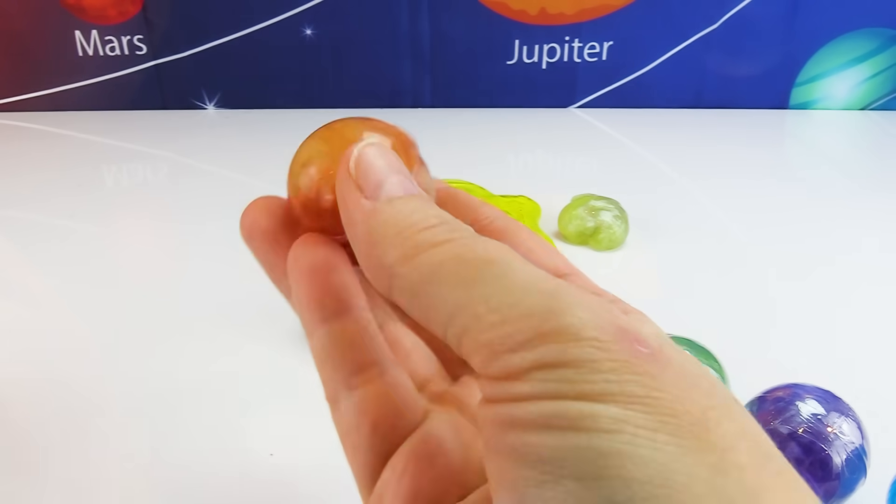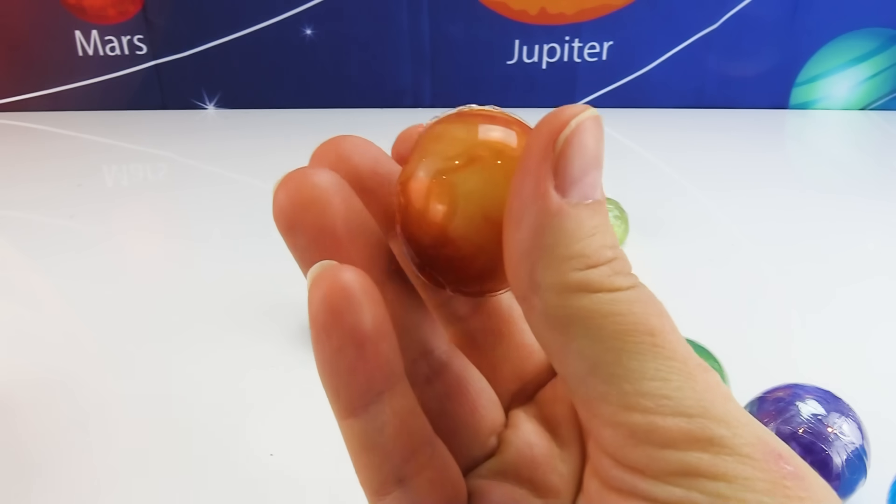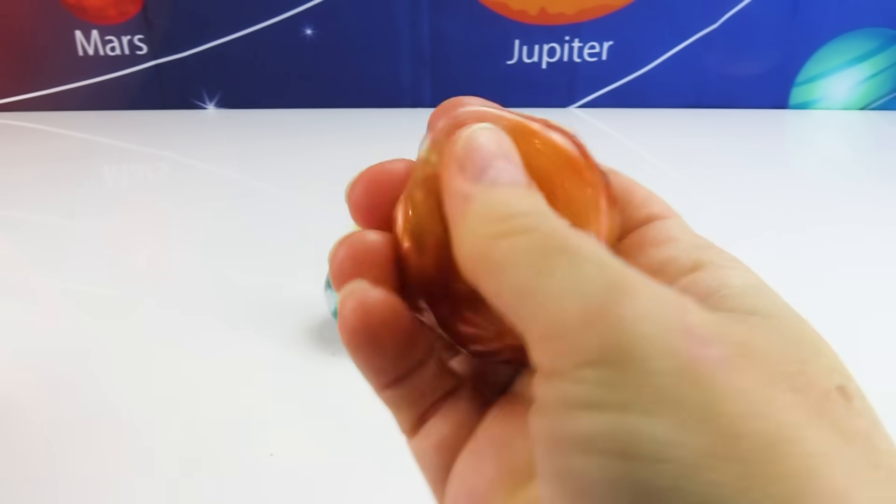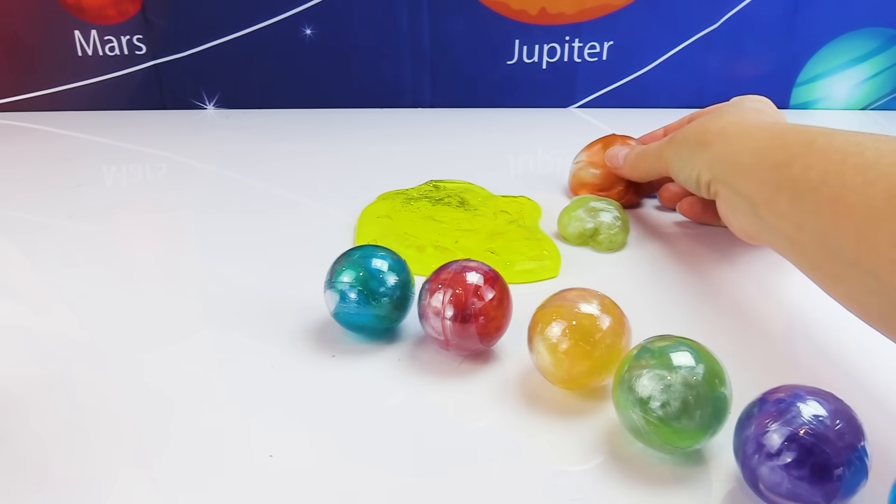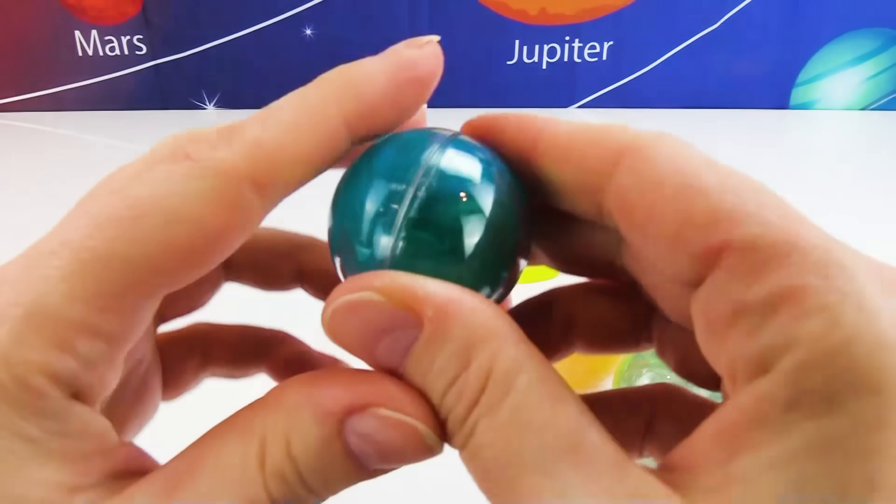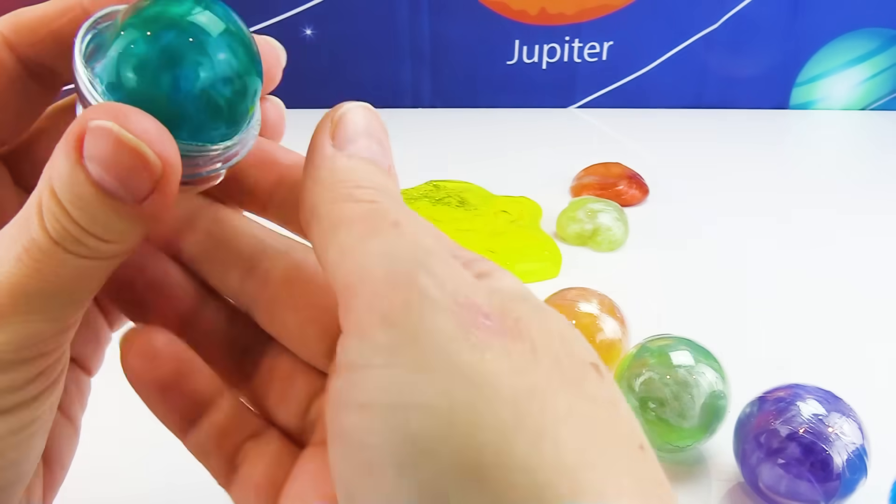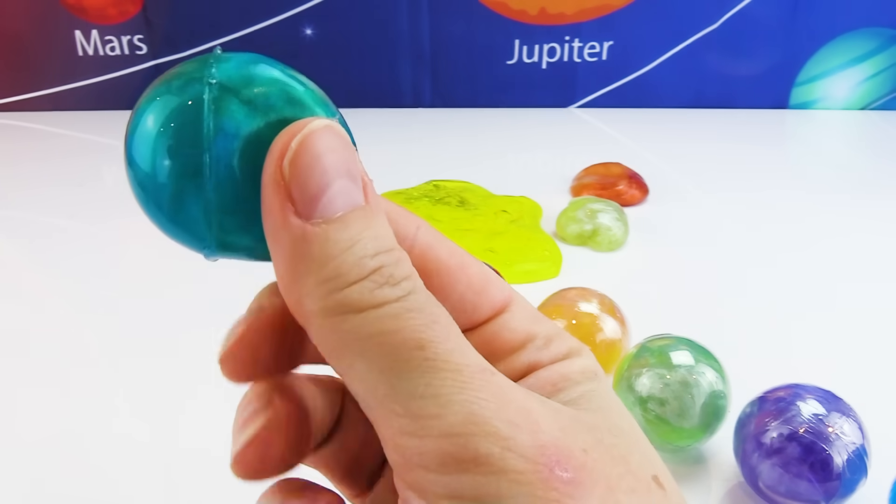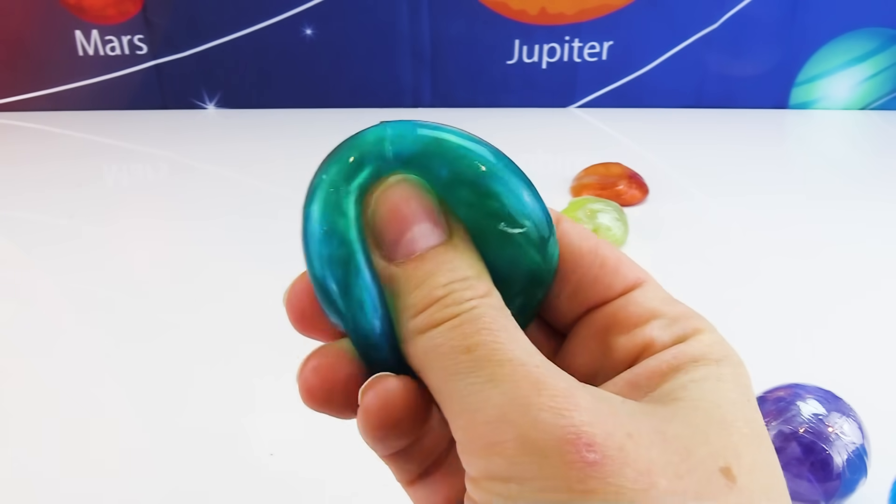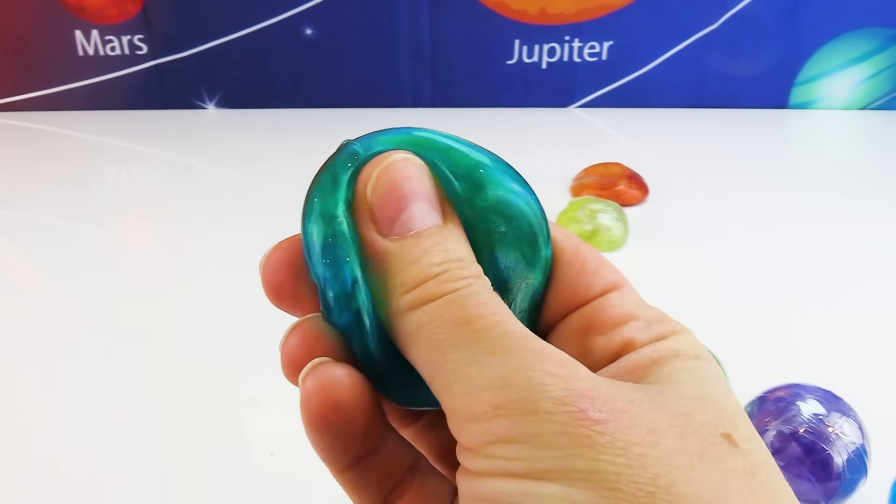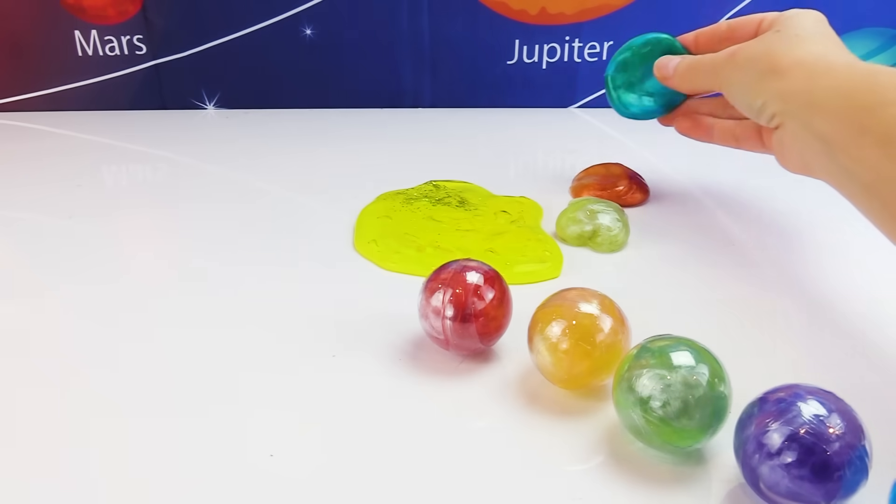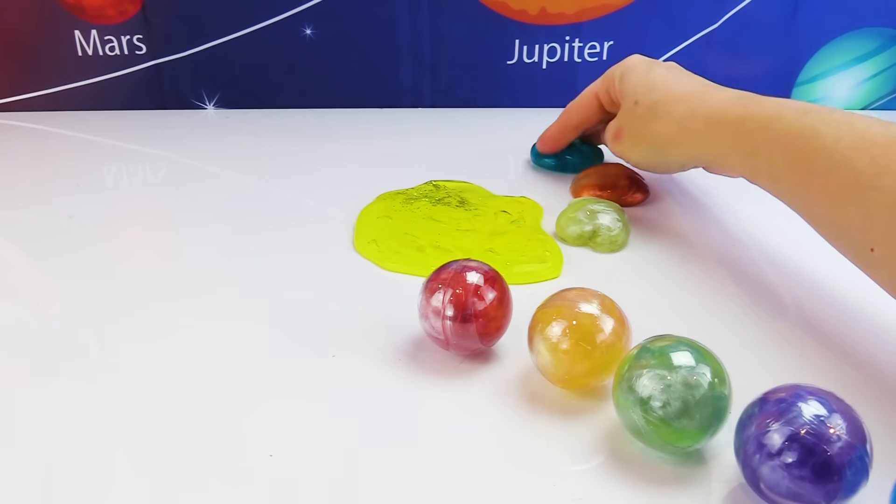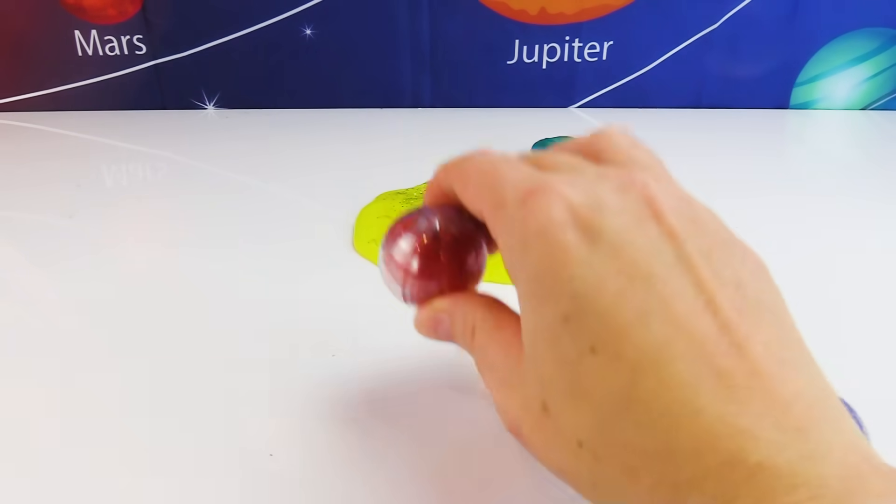So squishy! We'll put Mercury close to the Sun over here! Venus is up next! Pop open our Venus slime! Here it is! It's a nice round planet now in squish! Now it's a squishy, slimy planet! We'll put it a little further away from the Sun than Mercury! Third planet from the Sun!